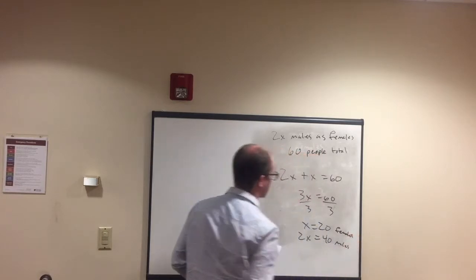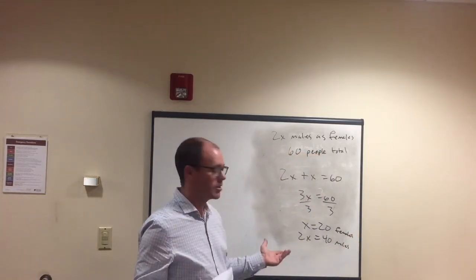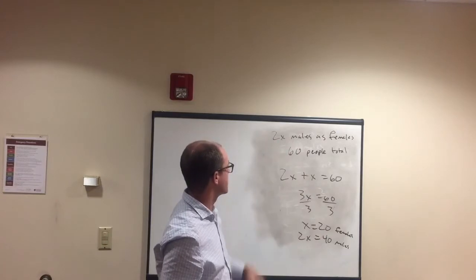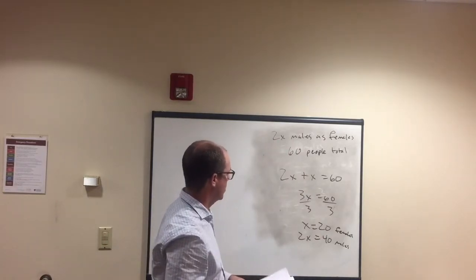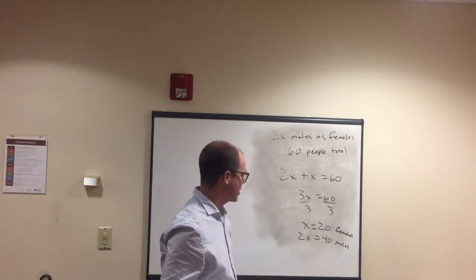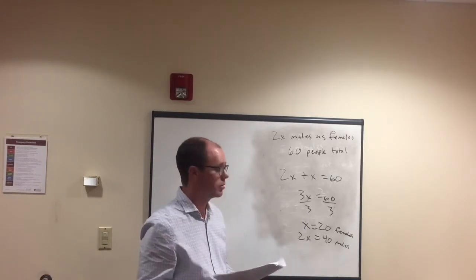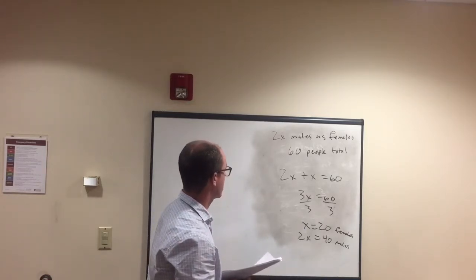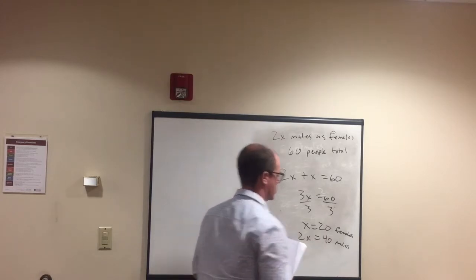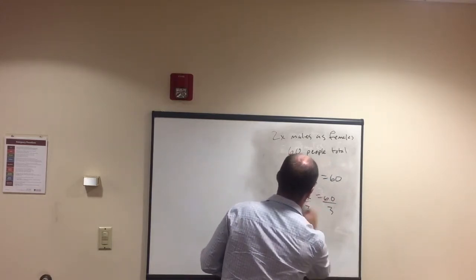Check to make sure the answer adds up and makes sense: 20 plus 40 is 60, which matches our total. And 40 is twice as much as 20, confirming the condition. So we know we have the right answer. This concept is important.